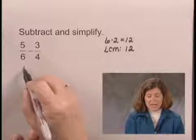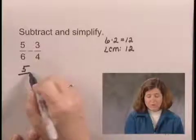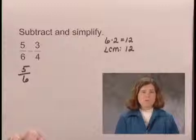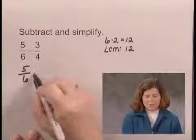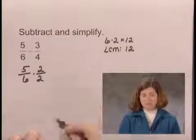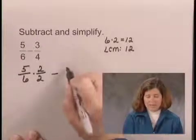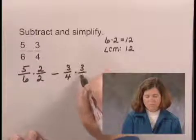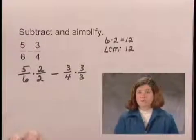So we will rewrite 5 sixths and 3 fourths with a denominator of 12. We'll do this by multiplying by 1, choosing the form 2 over 2 to rewrite 5 sixths with a denominator of 12, and choosing the form 3 over 3 to write 3 fourths with a denominator of 12.